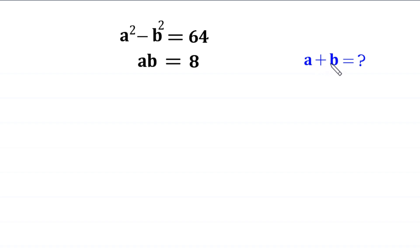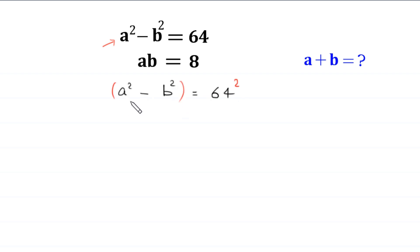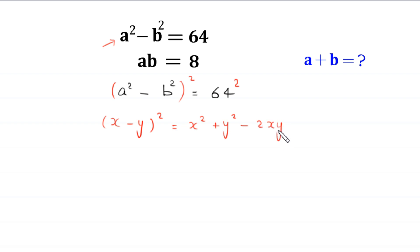Let us start by squaring both sides of this equation: a squared minus b squared is equal to 64. We square both sides. By using the algebraic identity, x minus y whole squared is equal to x squared plus y squared minus 2xy.